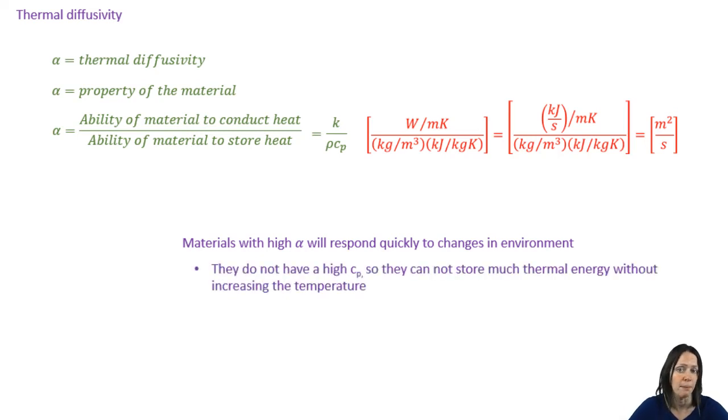Recall that the specific heat capacity measures how much thermal energy a unit of mass of a material can absorb or store before that temperature increases by one degree. So if the thermal diffusivity is high, the denominator is low and the material can't absorb a lot of thermal energy without its temperature increasing. However, if the thermal diffusivity is high, the numerator is large and the thermal conductivity is high. Therefore, they can conduct heat well or allow it to pass through, if you will.